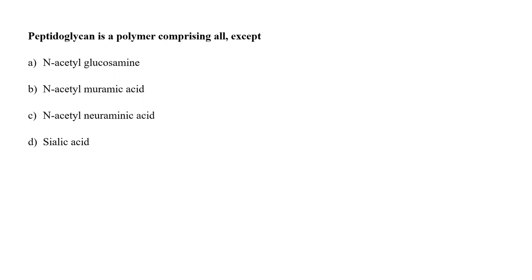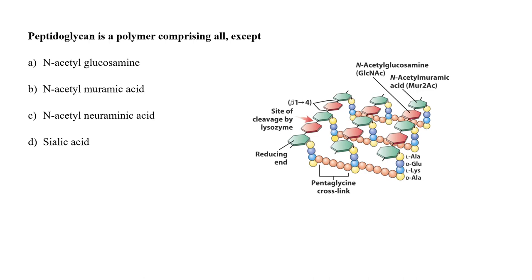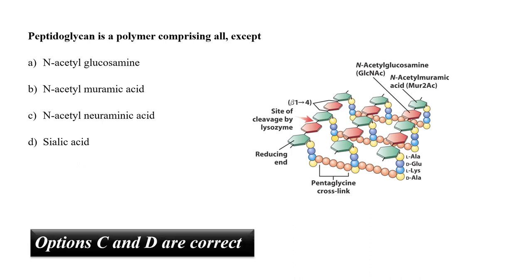Referring to the structure of a peptidoglycan molecule, it is a polymer made from repeating units of N-acetylglucosamine and N-acetylmuramic acid. It does not contain N-acetylneuraminic acid, which is also called sialic acid. So options C and D are not part of the peptidoglycan polymer.